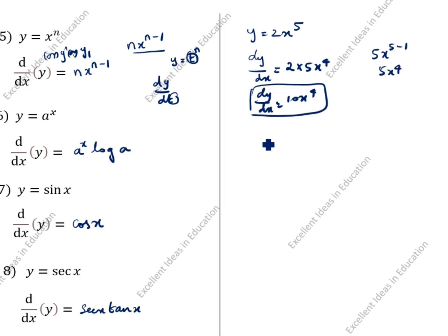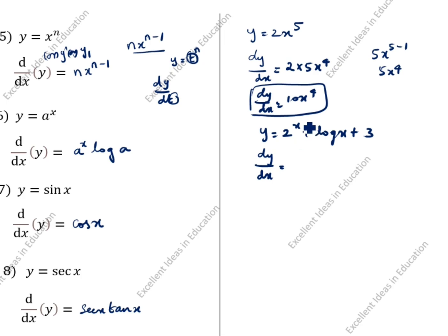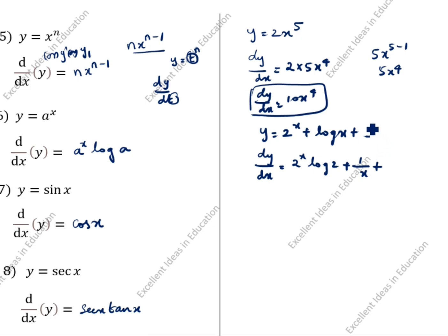Next example: y = 2^x + log x + 3. Differentiate: dy/dx = 2^x — here a is 2, so using a^x formula: 2^x · log 2. Plus differentiation of log x is 1/x. Plus differentiation of 3 is 0, so don't write it. This is the answer.